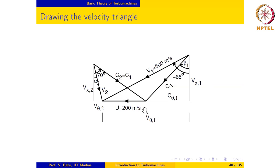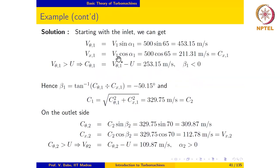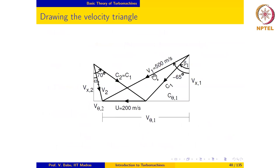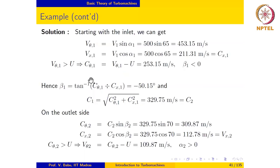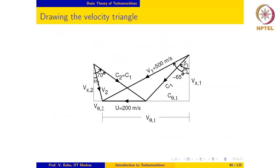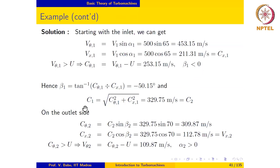Starting with the inlet: v_theta1 equals v1 sin(alpha1), which comes out to 453 meters per second. vx1, the axial component of the inlet absolute velocity, equals v1 cos(alpha1), and this is also equal to cx1. Since v_theta1 is greater than u, c_theta1 equals v_theta1 minus u. Beta1 is negative, and may now be evaluated as arctan(c_theta1 divided by cx1), which comes out to minus 50.15 degrees.